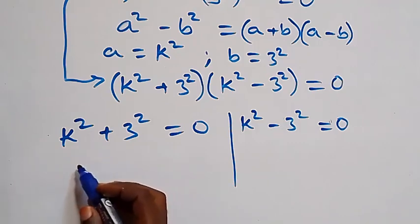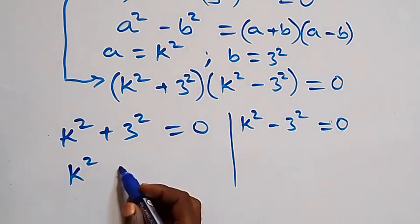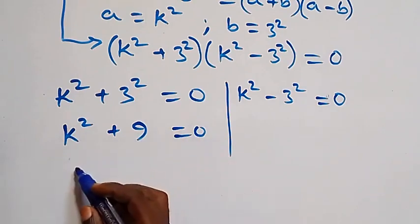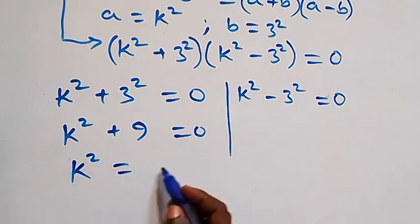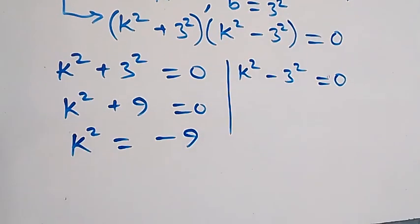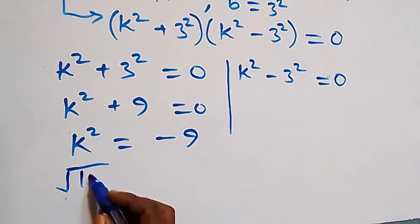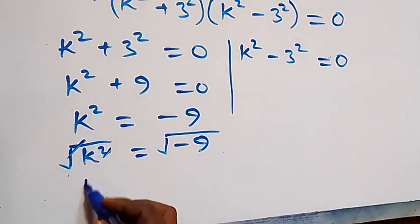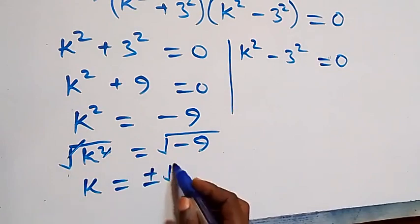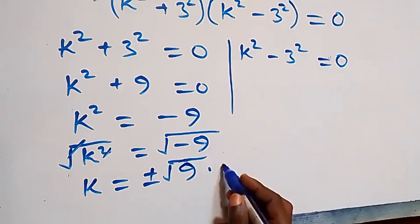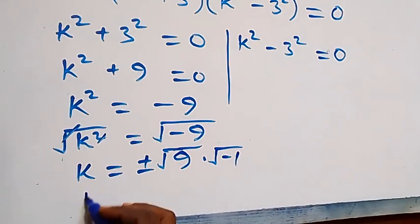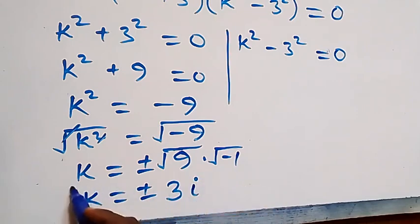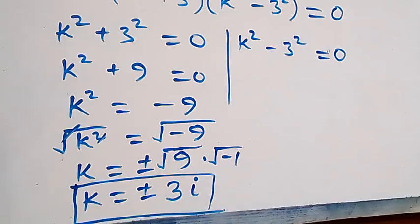Solving the first case: k squared plus 9 equals 0. Taking plus 9 to the other side gives k squared equals minus 9. Taking the square root of both sides gives k equals plus or minus the square root of 9 times the square root of minus 1, which is plus or minus 3i. So we have two complex solutions from here.